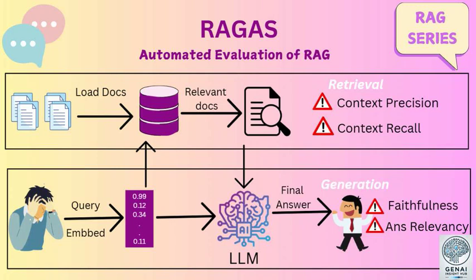Welcome to Gen.AI Research Insight Hub channel. Let's deep dive into some cutting-edge AI research. Today we're diving into RGAS — a new method for evaluating how well AI systems can use external information to answer your questions. It's especially relevant with all the buzz around large language models like ChatGPT.